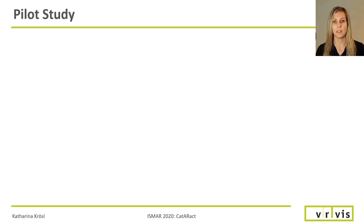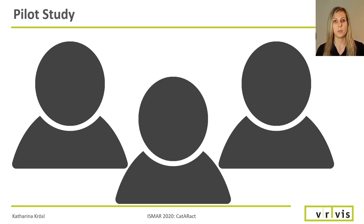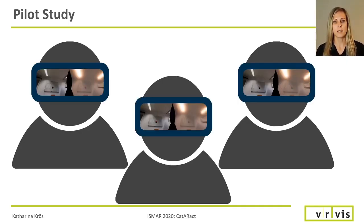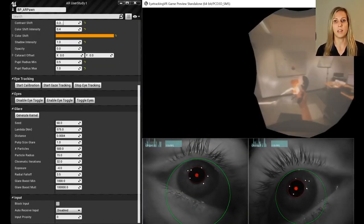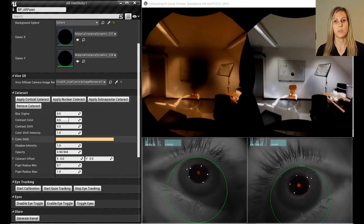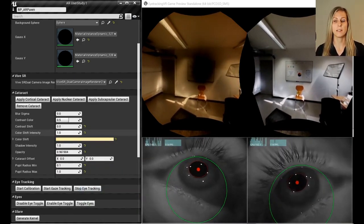We conducted a pilot study with three cataract patients between surgeries of the left and right eye. Cataracts are usually treated by replacing the affected lens with an artificial one. Since patients often get surgery on their second eye a few days or weeks after their first operation, there is a very limited timeframe in which they can compare our simulation with their corrected eye against their still cataract-afflicted eye viewing the unmodified AR video stream. We asked them to point out the differences and advise us on how to adjust the simulation to match their cataract vision as closely as possible.